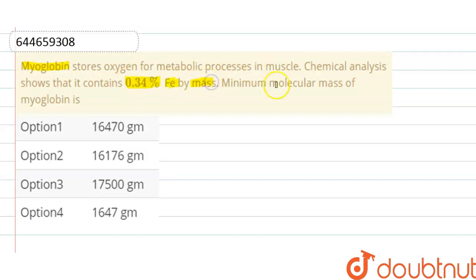Okay, so here consider the minimum molecular mass of myoglobin as X. And here in myoglobin, 0.34 percent of Fe by mass is present. That means in 100 gram of myoglobin there is 0.34 gram of iron is present.